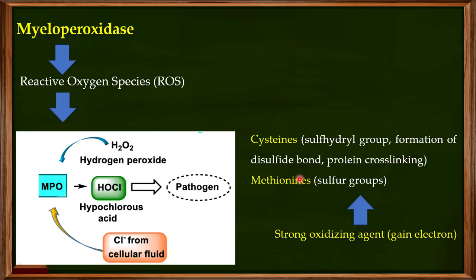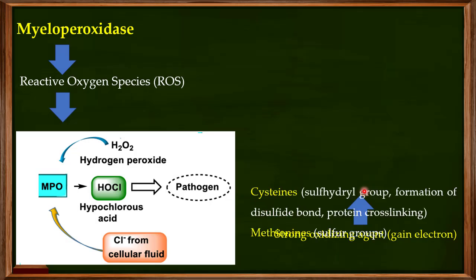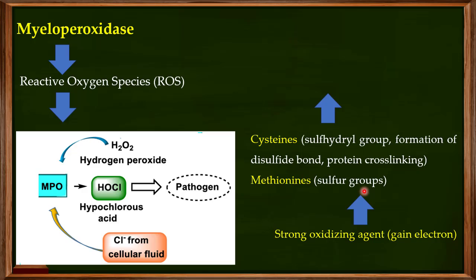Hypochlorous acid also acts on methionine, oxidizing its sulfur groups. When cysteines and methionines are oxidized by hypochlorous acid, it leads to protein aggregation. This means those proteins are no longer available for the pathogen's functions, and without functional proteins the pathogen cannot survive. This is one way myeloperoxidase helps kill pathogens — by oxidizing cysteine and methionine, leading to protein aggregation.